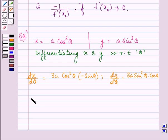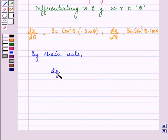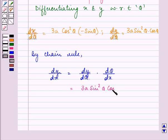Now further, by chain rule, we can easily find out dy by dx, that is on multiplying dy by d theta by d theta by dx, that is the reciprocal of dx by d theta. So we have 3a sin square theta cos theta multiplied by 1 upon 3a cos square theta into minus sin theta.